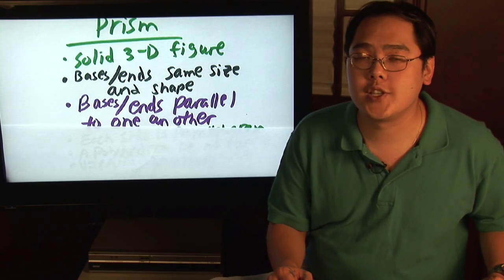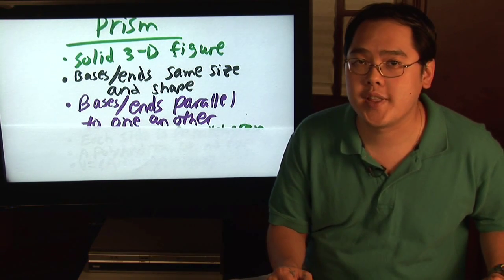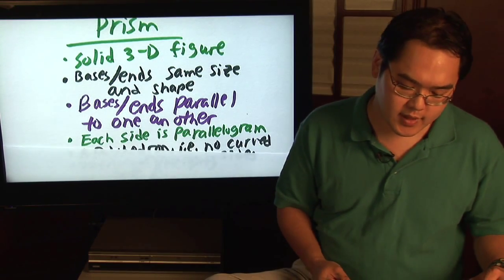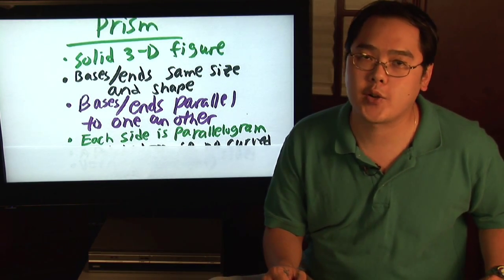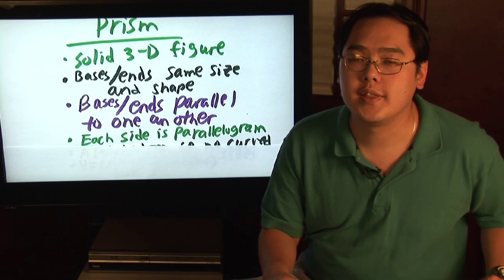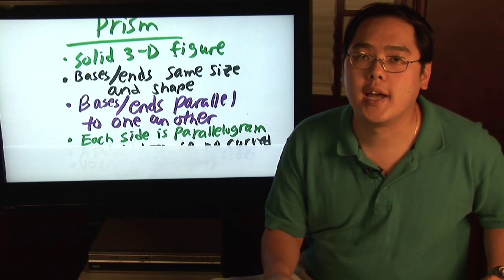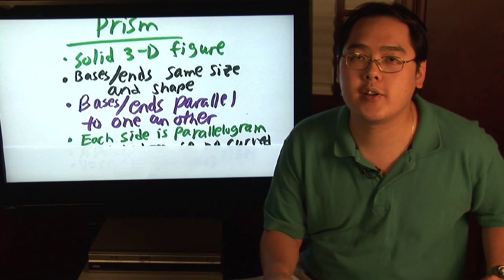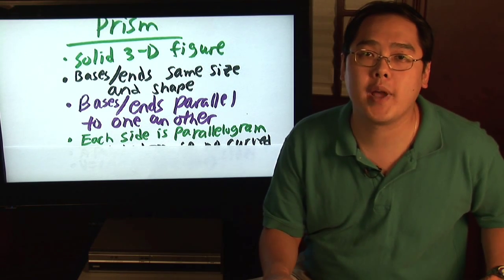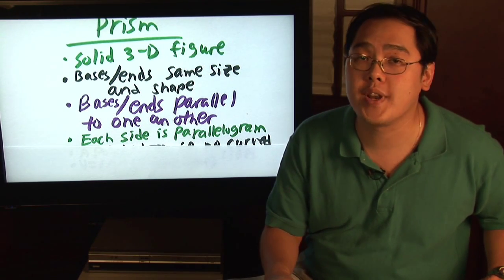Also the two bases in the two ends of a prism are parallel to each other and they never meet. Each side is a parallelogram. Remember what a parallelogram was? At least two pairs of parallel sides and two pairs of equal congruent angles.